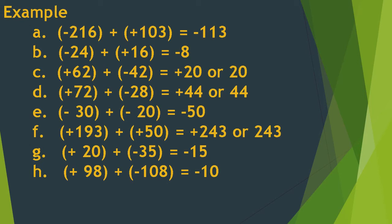Letter F: positive 193 plus positive 50 is equal to 243. They have the same sign, so we affix their common sign, giving us positive 243.